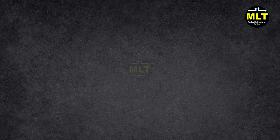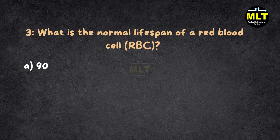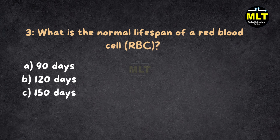MCQ 3. What is the normal lifespan of a red blood cell (RBC)? A. 90 days. B. 120 days. C. 150 days. D. 180 days.